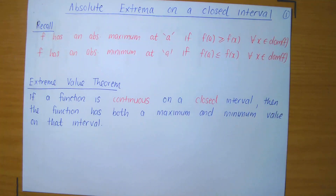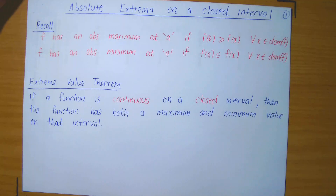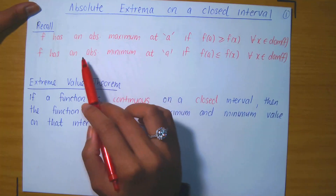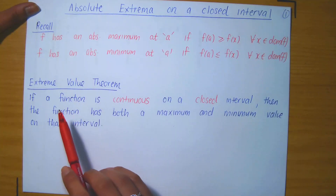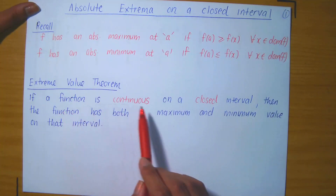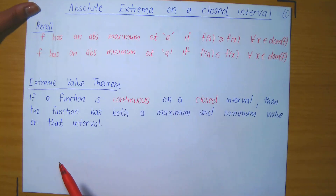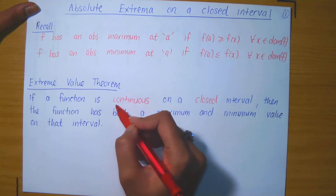Now the Extreme Value Theorem, which I have stated here, is a result which tells us under which conditions we will be able to find the absolute maximum and absolute minimum. Those conditions are that the function must be continuous on a closed interval.